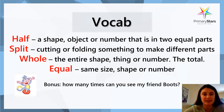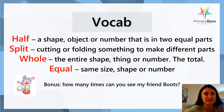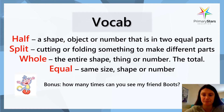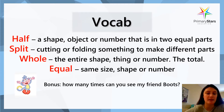So we're going to start by revising our vocabulary for this week. Half is a shape, object, or number that is in two equal parts. Split means cutting or folding something to make different parts. Whole means the entire shape, thing, or number — the total. And equal means the same size, shape, or number. Today, don't forget to look out for my friend Boots and tell me at the end how many times you see him.